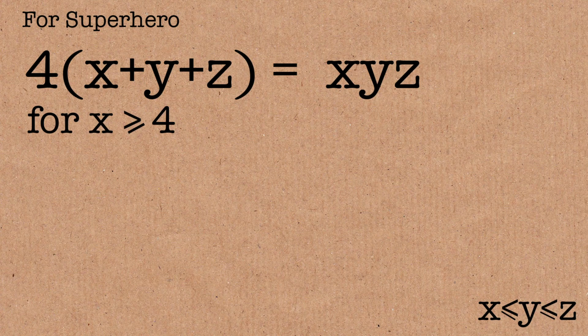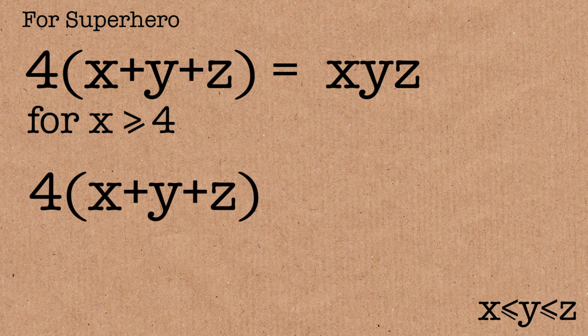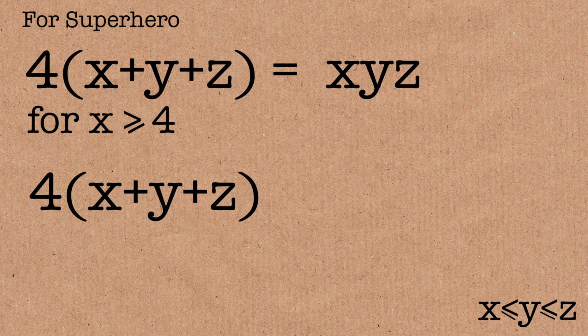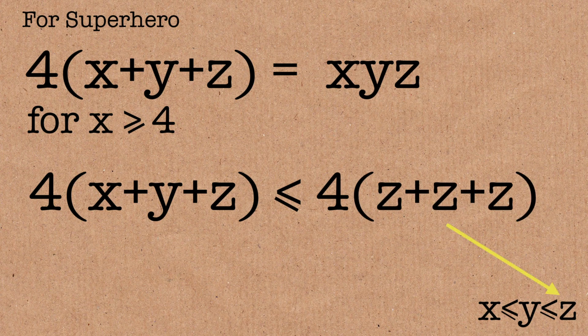If you look at this equation here, on the left-hand side, x is the smallest number. x is smaller than y, it's smaller than z. The left-hand side, which is this, will be smaller than 4 lots of z plus z plus z. z is the biggest number out of those three, which is 12z.